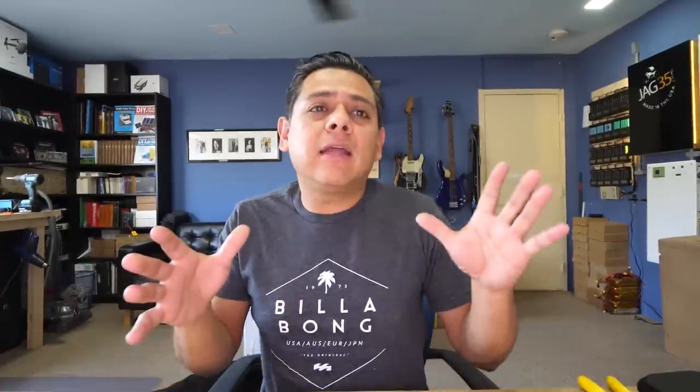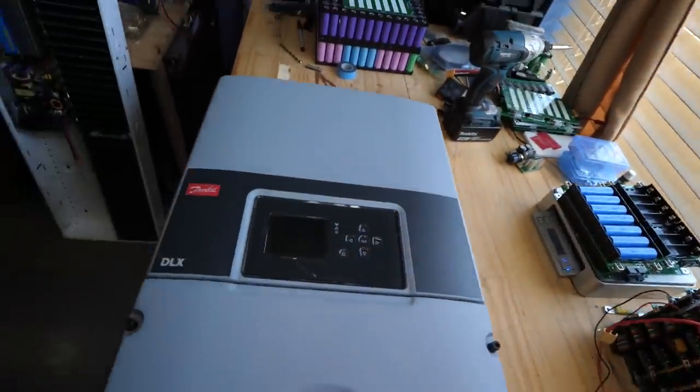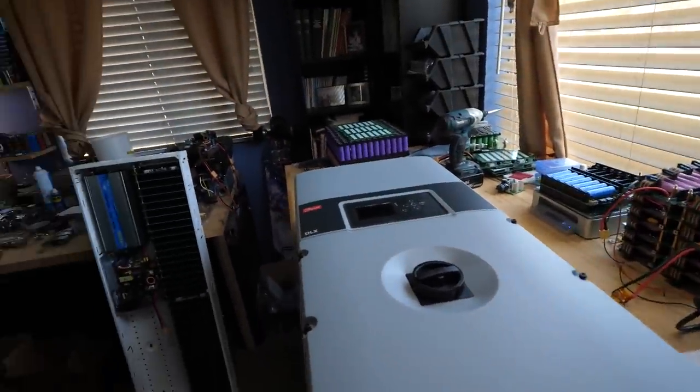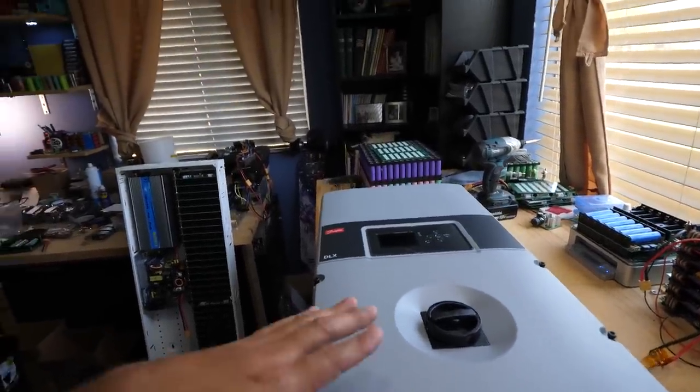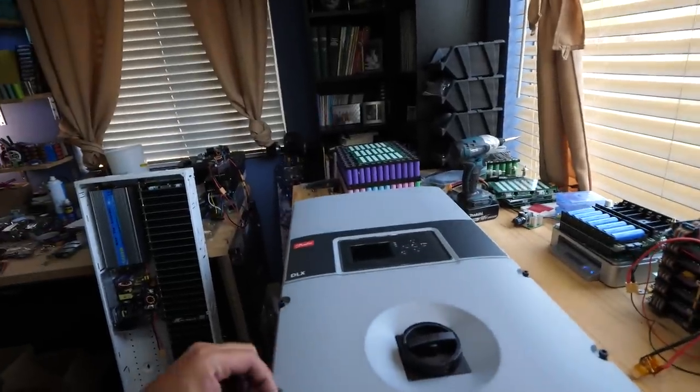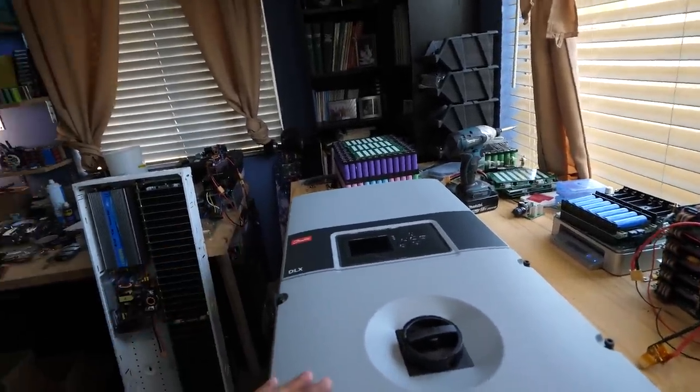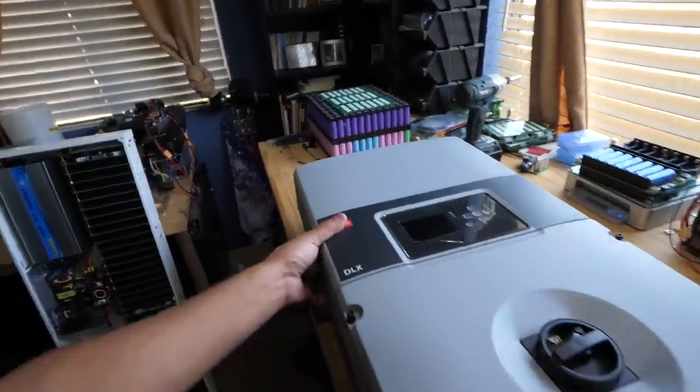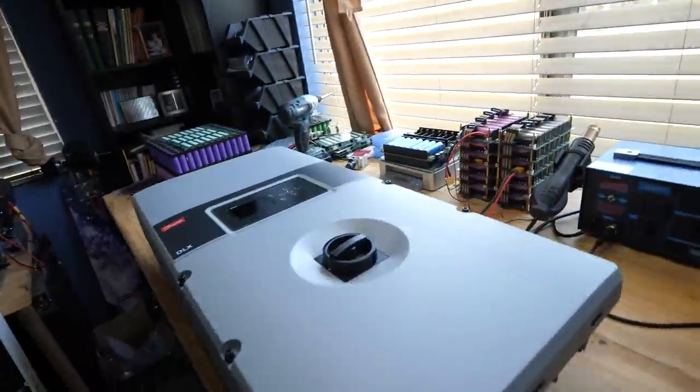On this video, I'm typically going to go through what's in there, the build quality, take it apart, see the internals, and talk a little bit about how you connect it. I'm not going to actually connect it and make it work — I'll leave that for a future video. This is the Danfoss DLX 3.8UL. The 3.8 is the kilowatt rating — about 3,800 watts that this one will put out. Here's the original box, and I took it out.